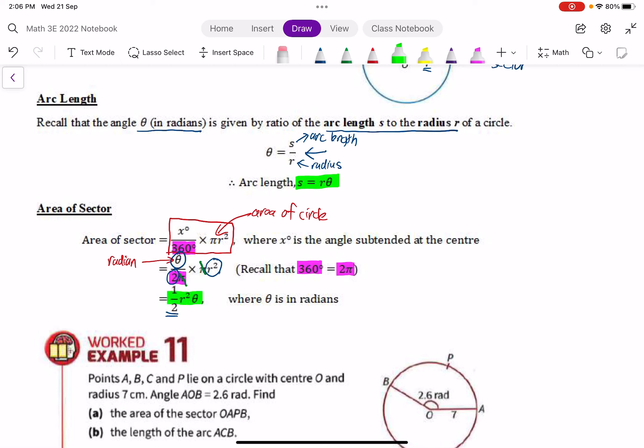In the next few worked examples, we are going to apply these two formulas to find the arc length and area of sector when the angle theta is in radians. See you next time.